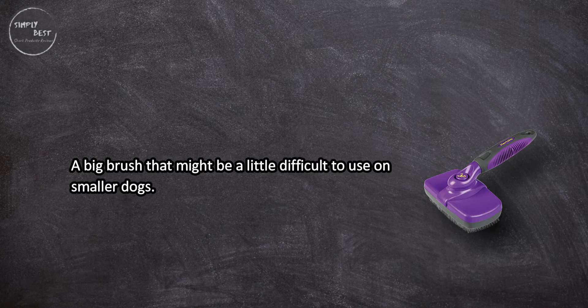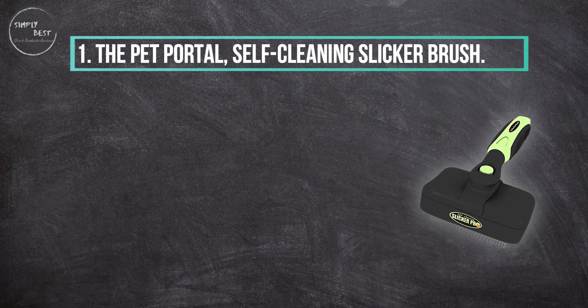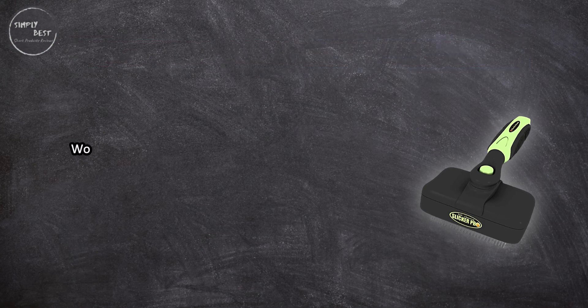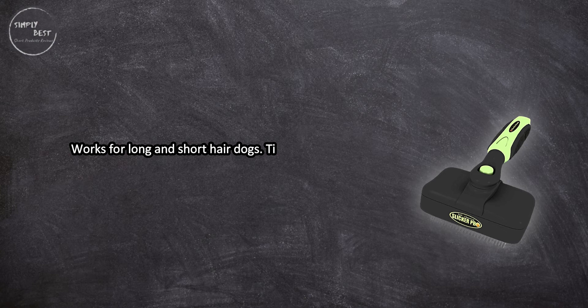At number one: The Pet Portal Self-Cleaning Slicker Brush. Works for long and short hair dogs. Tines work well.